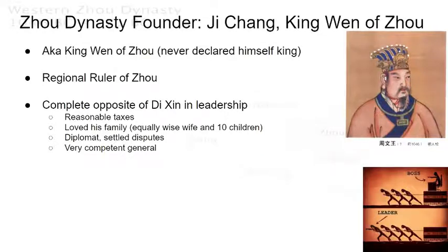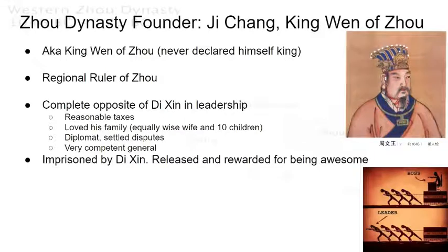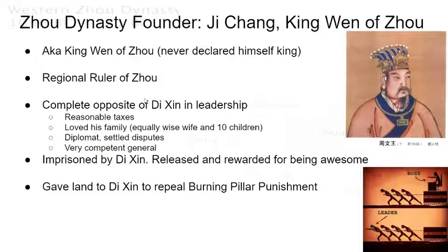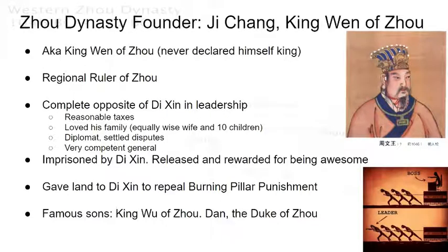Eventually Ji Chang was imprisoned by Di Xin. But because he was so awesome, Di Xin's ministers bribed the king to let Ji Chang go. King Wen was so impressive that he was released and even rewarded by Di Xin. He was also very kind: he gave land to Di Xin in order to repeal the burning pillar punishment, sacrificing his own possessions to save countless future people from that horrible punishment. He had a couple of famous sons: King Wu of Zhou, and Dan — the Duke of Zhou.